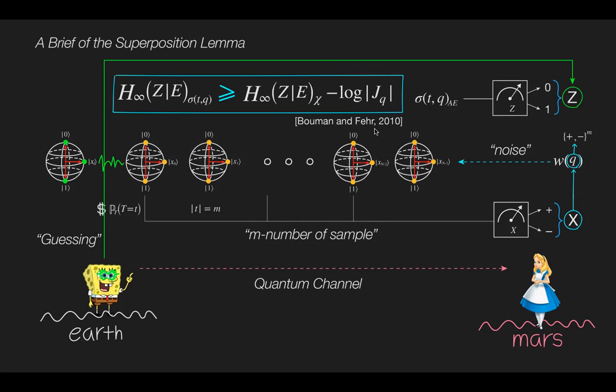In 2010, Bouman and Fehr showed that the conditional min entropy is lower bounded by the conditional min entropy of its mixed state minus the log of the size of the superposition state.